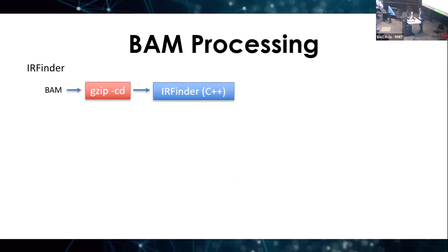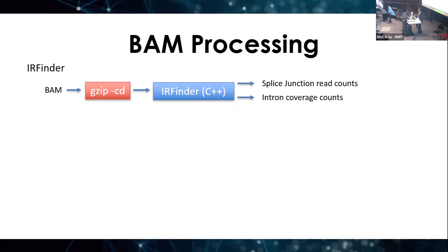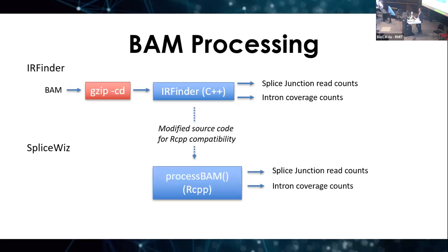As a starting point, my predecessor William Ritchie created a command line utility called IRFinder that analyzes intron retention levels in RNA sequencing. At its core, IRFinder decompresses BAM file data using the Linux GZIP command line and pipes the data onto a C++ subroutine, producing statistics of splice junction or intronic coverage counts used to calculate intron retention levels. To create SpliceWiz, I modified the IRFinder source code to be compatible with RCPP, performing the same functions.